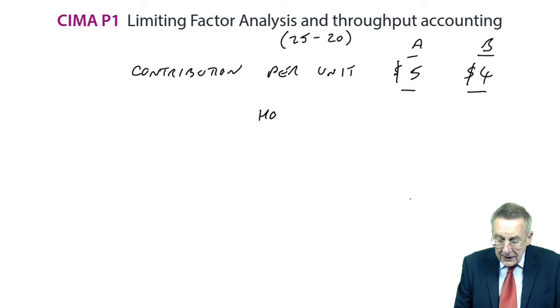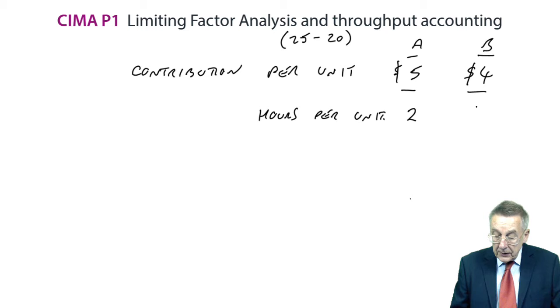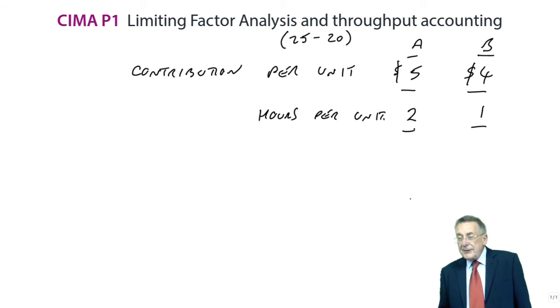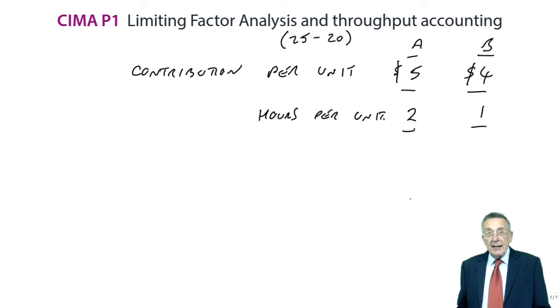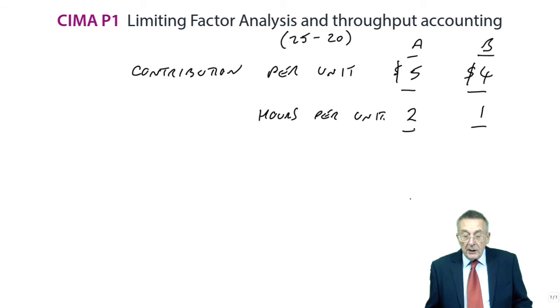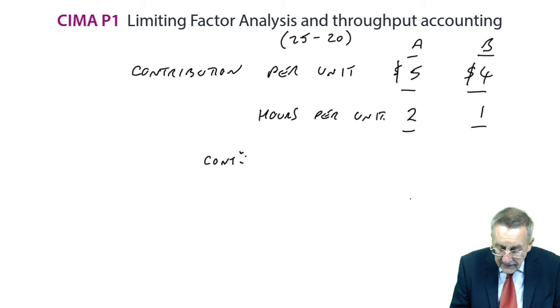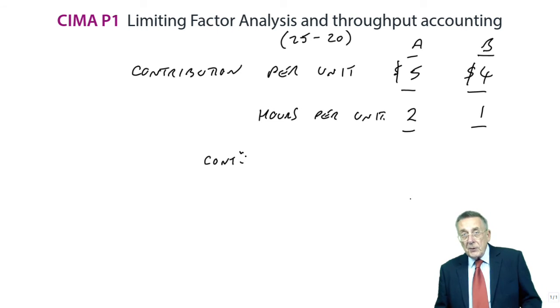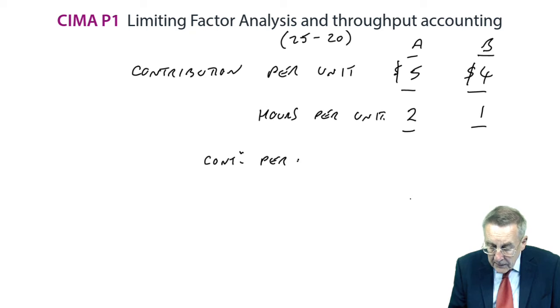And you see, the hours per unit, A takes two hours a unit, B only takes one. What it means is, if we only had, for example, if we only have two hours available, we could use the two hours to make one A and get $5. Or with two hours available, we could make two Bs and that would give us $8. So we've got to put the two together. And the standard way, whether it's obvious or not, the standard way of deciding which is best, which is second best, and so on, is to look at the contribution per unit of the limited resource, which in this case, the contribution per machine hour.